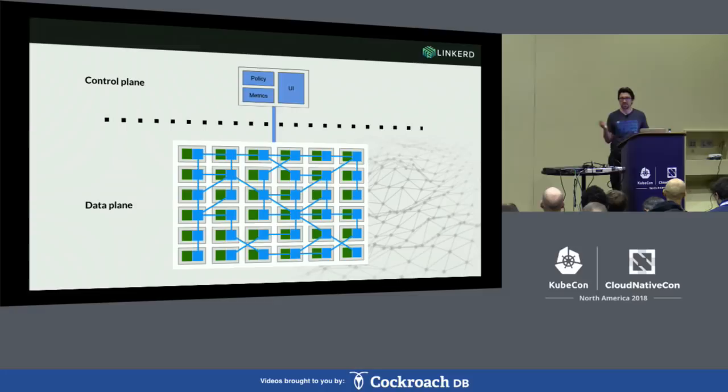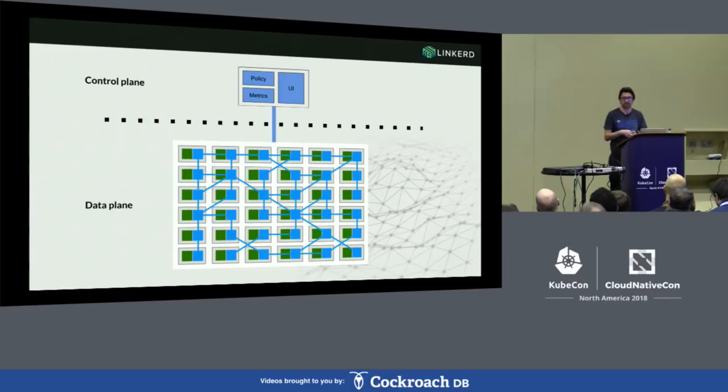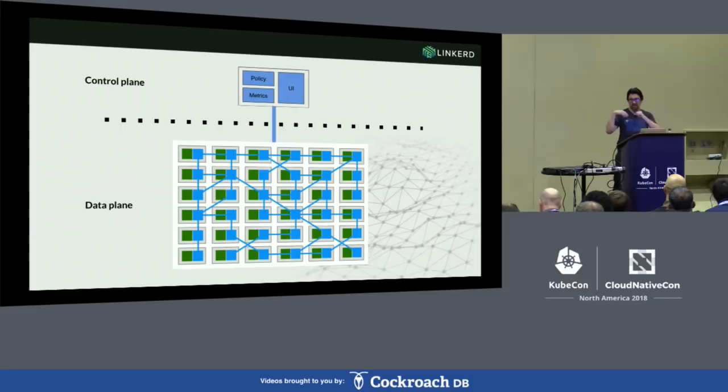There are typically two components. You have a control plane, which is really the operational view of what's going on — that's a place where Prometheus would live. You collect metrics, it gives you some kind of a user interface either through a dashboard or through a command line interface, and it's providing service discovery to your cluster and gathering metrics. The other side is the data plane — that's typically a proxy that's running as a sidecar next to each of your pods or containers in your application.